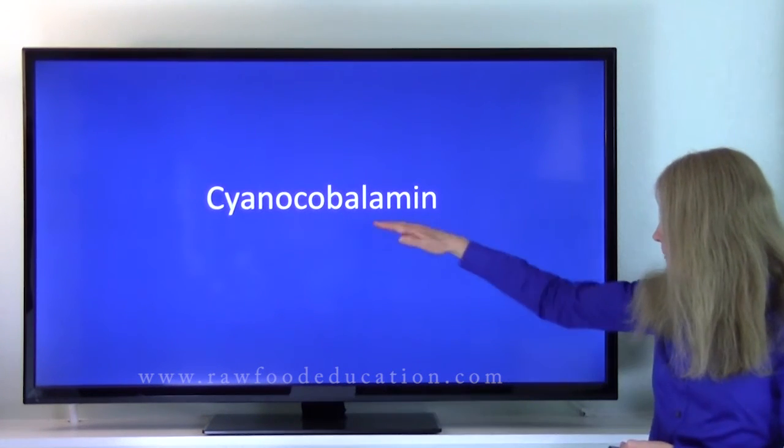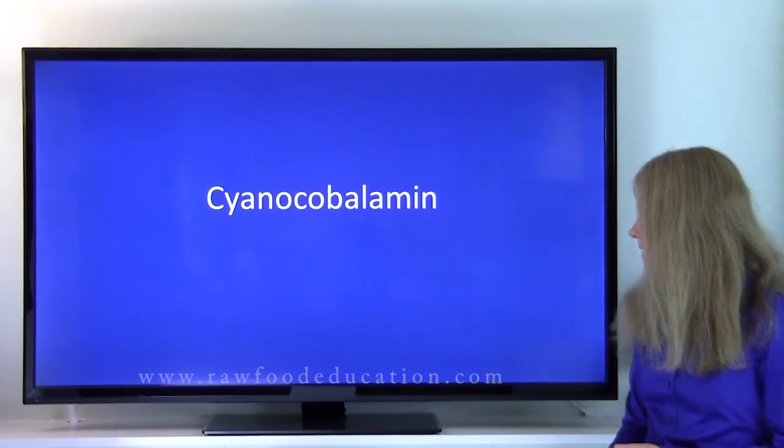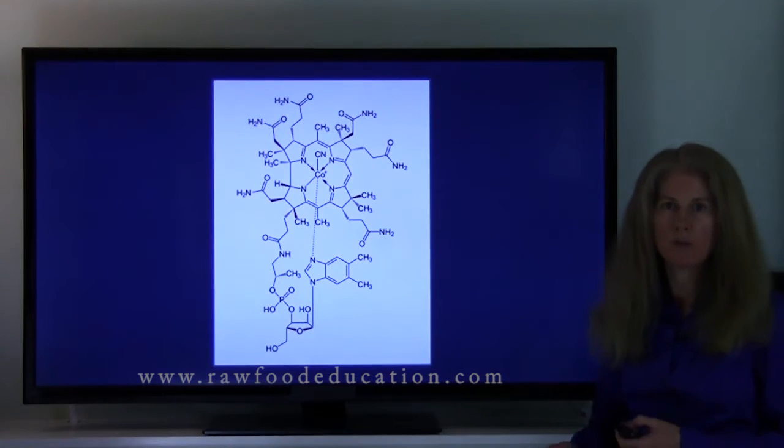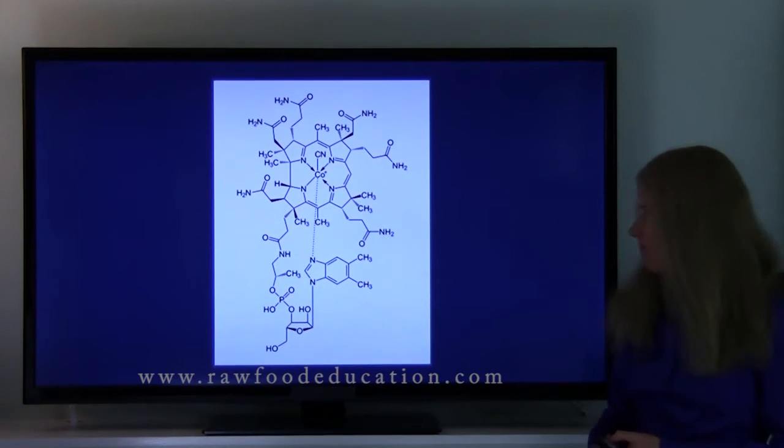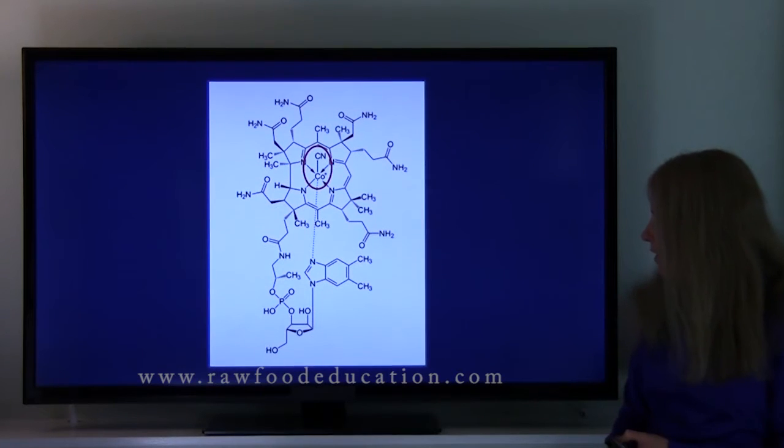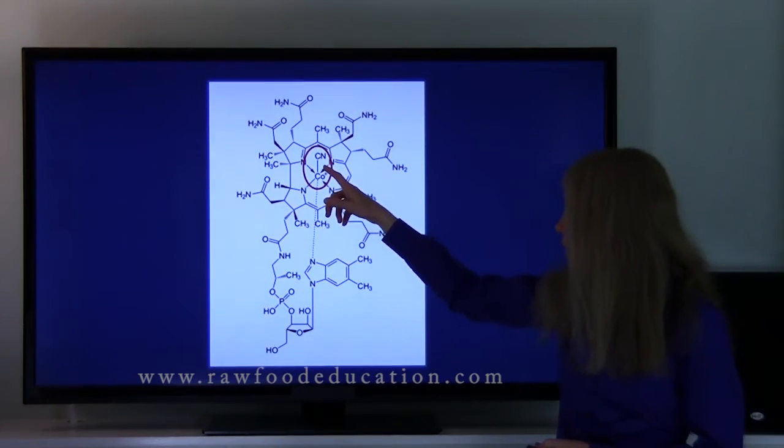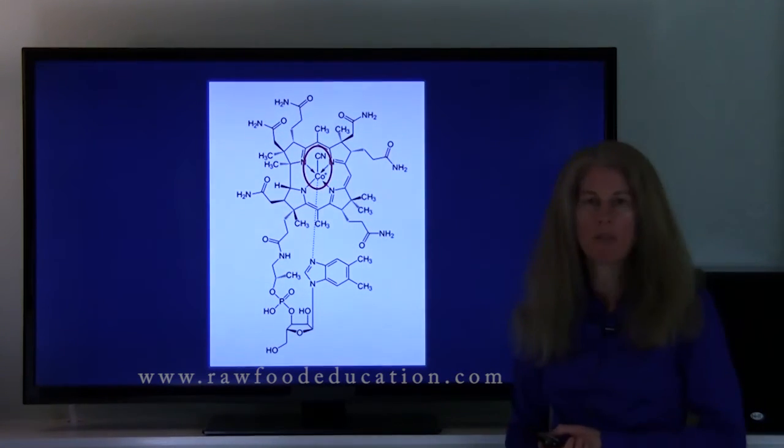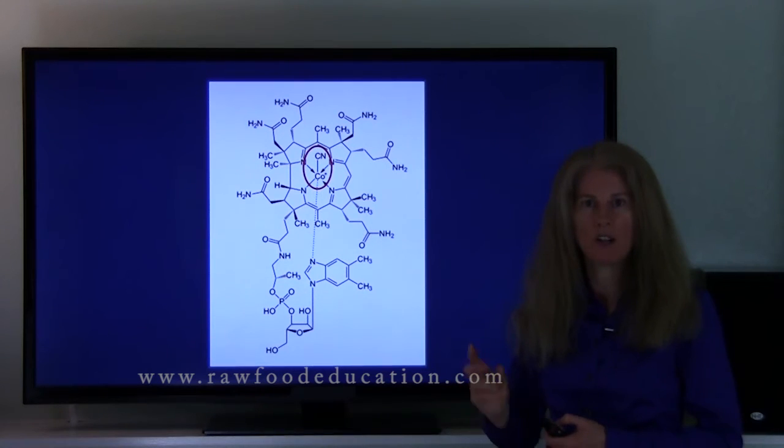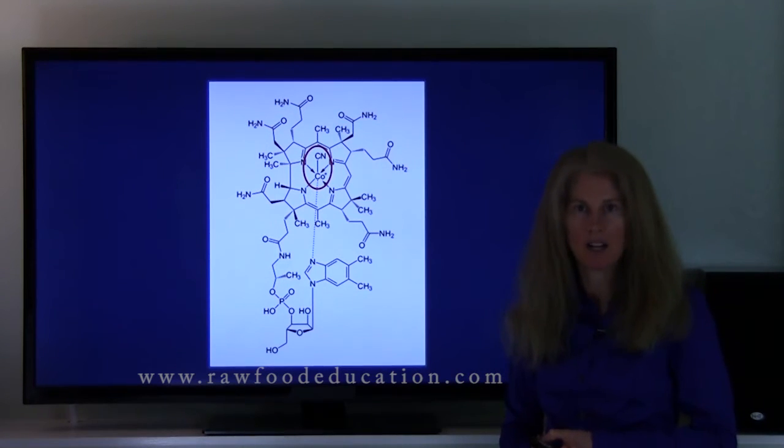Our next form of vitamin B12 is cyanocobalamin. Now cyanocobalamin looks similar to the other forms of B12 that we've seen. There's a cobalt in the center of the molecule. But where it differs is what's attached to that cobalt. With cyanocobalamin, we have a cyano group attached to that cobalamin, composed of one carbon and one nitrogen hooked together by bonds.